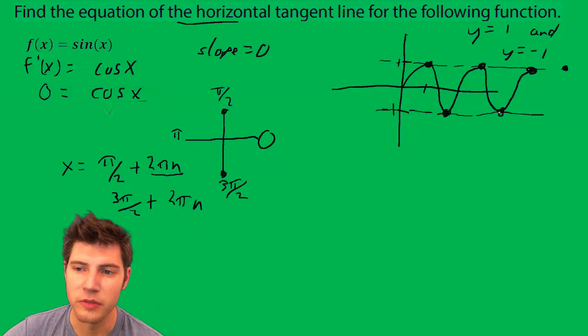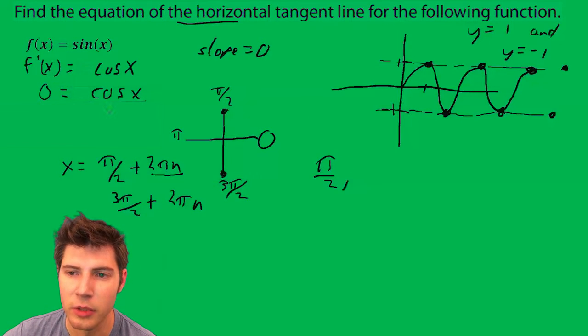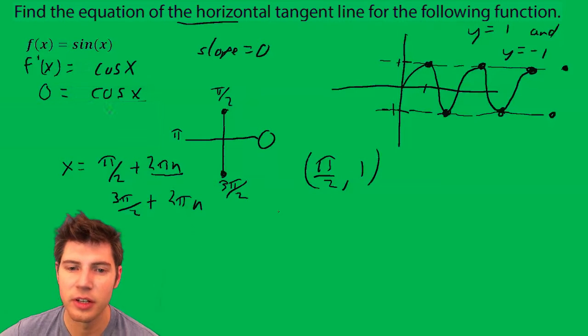And the 3π/2 is what's down here, and then plus 2πn means all these points of tangency. So we really need to worry about one of them, so I'm gonna worry about this π/2 comma 1. That's gonna be one of my points.